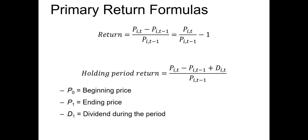You undoubtedly used these in your introductory finance course, but we'll be using them almost every day going forward. The basic return formula is simply the price at the end of a period minus the price at the beginning of a period, all divided by the price at the beginning of the period. We often use this formula when we don't have any income during the investment period. If we've earned some income in the form of a dividend or rental income, we need to factor that into the return on investment — that's why we have the holding period return formula.